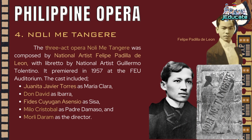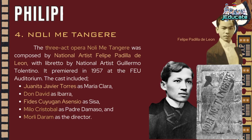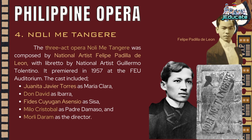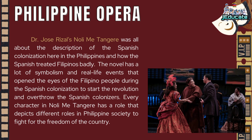Number 4: Noli Me Tangere. The three-act opera Noli Me Tangere was composed by national artist Felipe Padilla de Leon, with libretto by national artist Guillermo Tolentino. It premiered in 1957 at the Feu Auditorium. The cast included Juanita Javier Torres as Maria Clara, Don David as Ibarra, Fidez Cuyugan Ascencio as Sisa, Melo Cristobal as Padre Damaso, and Morley de Ram as the director. Dr. Jose Rizal's Noli Me Tangere describes the Spanish colonization in the Philippines and how the Spanish treated Filipinos badly. The novel opened the eyes of the Filipino people during the Spanish colonization to start the revolution and overthrow the Spanish colonizers. Every character depicts different roles in Philippine society in the fight for the freedom of the country.